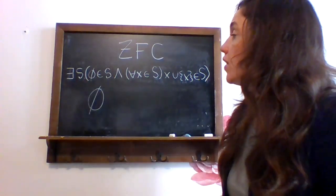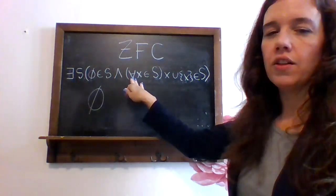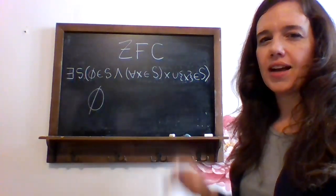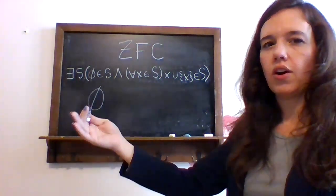And this symbol means for all. For all X in S. And here's the real engine of the axiom - the thing that gets us going and keeps going all the way until the end.